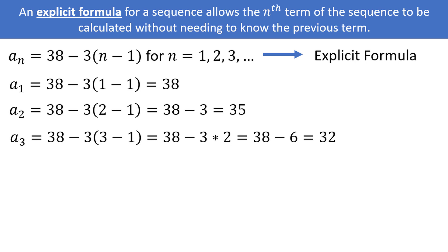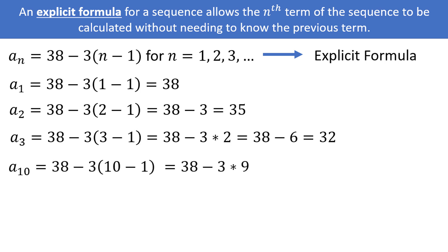The nice thing about the explicit formula is you can find values far into the sequence without needing to know the previous value. So if you plug in 10 for n, you can find the 10th value without needing to know the first 9 values. You would get 38 minus 3 times (10 minus 1), which is equal to 38 minus 3 times 9, or 38 minus 27, which is equal to 11.